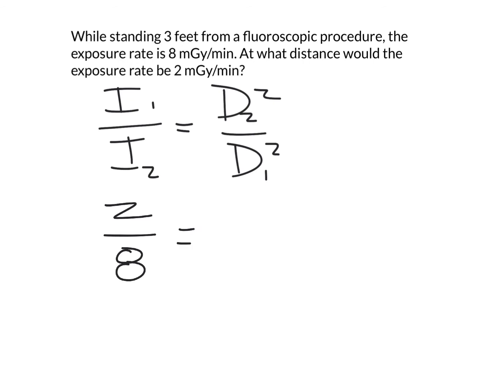I'm going to put 3 squared up top over x squared, because the x squared is what's related to 2 milligray per minute. So if we cross multiply this, we're going to get 2x² equals - we multiply all that out - it comes to 72.